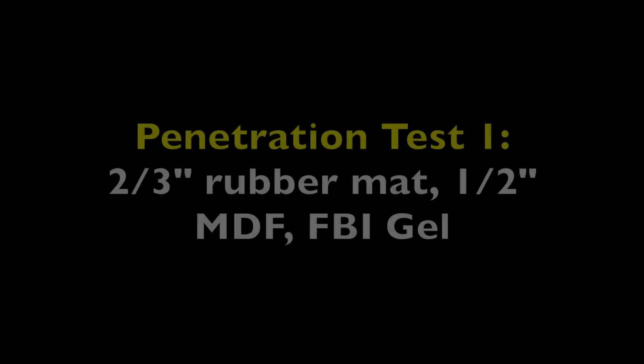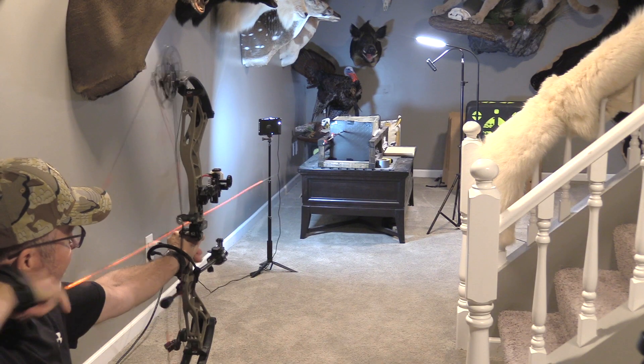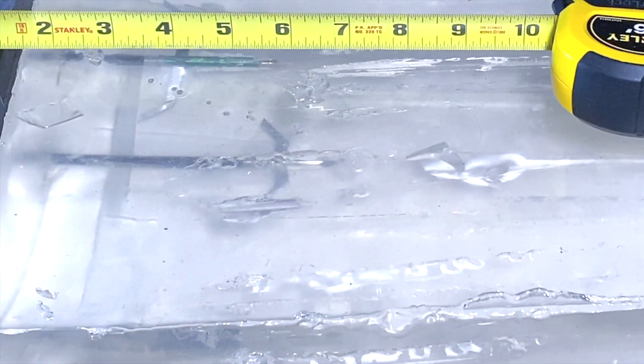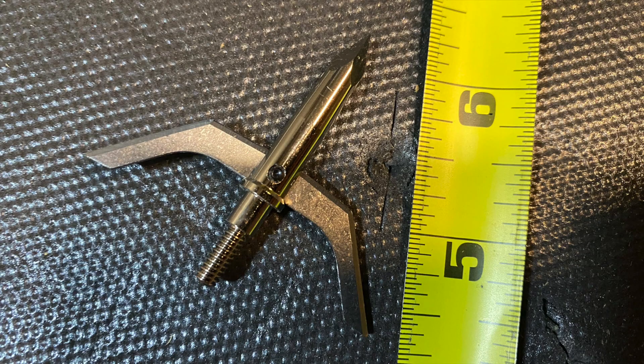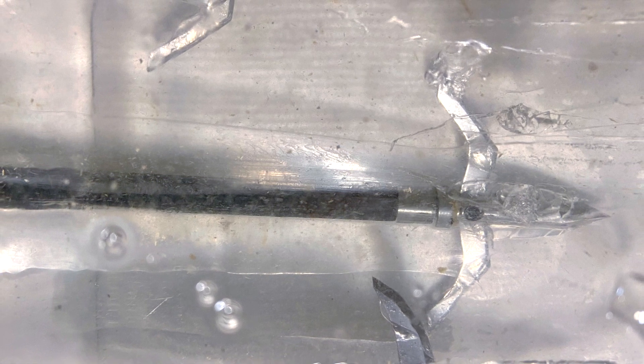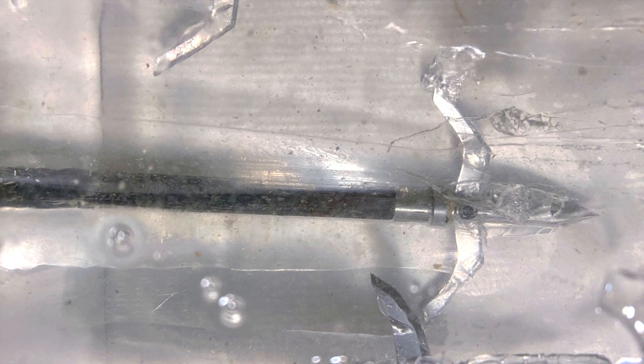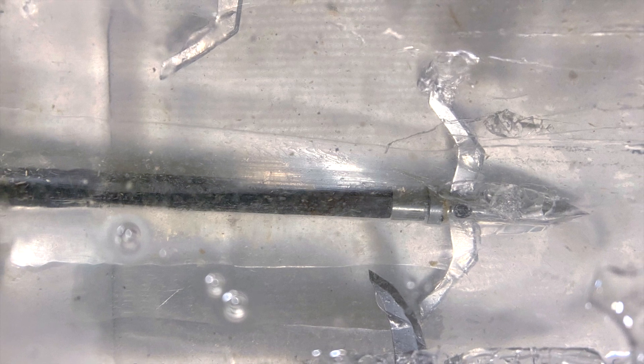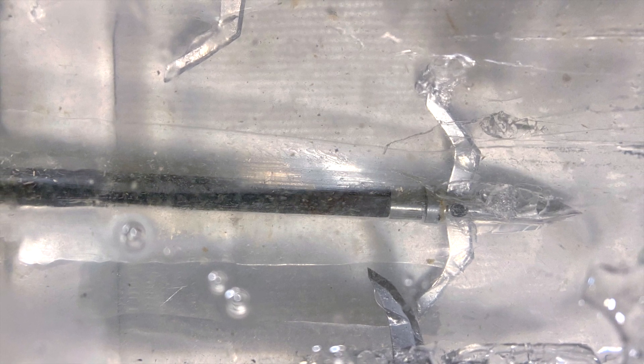It penetrated through seven inches. Here you can see the entrance hole, and it's right at one inch on the initial cut. Then by the back of this layer of MDF and RoboFoam mat, it opened up to the full two inches and retained that throughout the rest of the penetration.